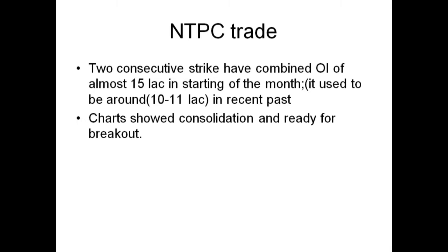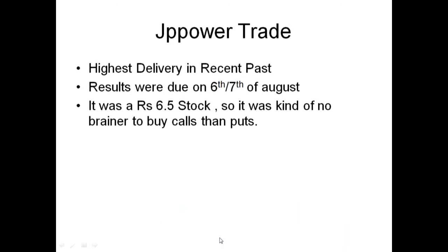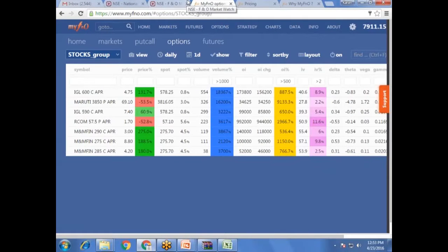With almost 5 to 6 lakhs OI in the 135 calls and 140 calls, totalling 15.5 lakh OI versus the usual 10 lakh, it was clear there was something there. For OI to work as a filter, you have to look at the numbers daily — whether the OI is significant or not. With MyFNO's filter, it is easily doable. That's my conclusion.